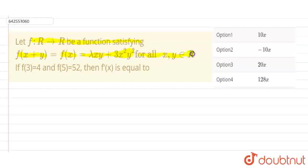First of all, x, y belongs to R. The value of f of 3 is given to us, that is 4, and f of 5 is given to us, that is 52. We have to find the value of f'(x), and 4 options are given to us. Option a is 10x, option b is minus 10x, option c is 20x, and option d is 128x.